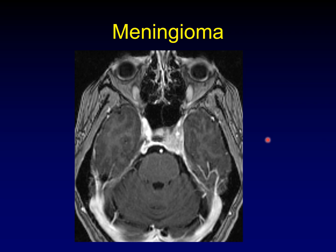In this case it's pretty obvious this is a meningioma because of the bulky portion of the tumor in the cavernous sinus. But remember that meningiomas also have dural tails, and if all you're looking at is that linear dural tail running away from the meningioma, that might be confusing for perineural spread — particularly worrisome with an aggressive WHO grade 3 meningioma that you might expect to have aggressive features. Also, if the meningioma has been resected and all you're left with is the residual dural tail, you can see how that might be confusing.